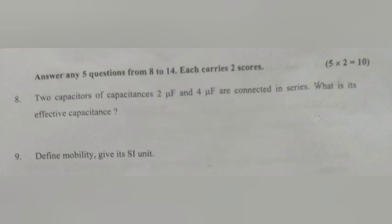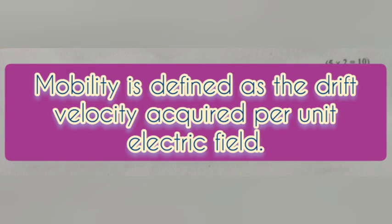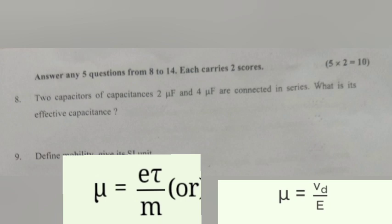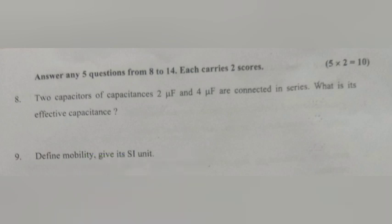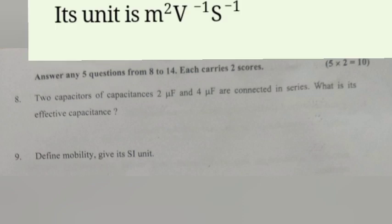Question 9. Define mobility and give its SI unit. Answer: Mobility is defined as the drift velocity acquired by unit electric field. Mobility or mu equals drift velocity by electric field. Its unit is m raised to 2, v raised to minus 1, s raised to minus 1.